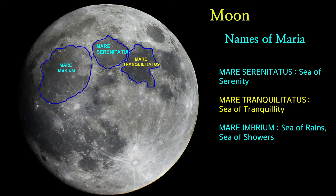Mare Tranquilitatis is a lunar mare that sits within the Tranquilitatis basin on the Moon. Mare Tranquilitatis means Sea of Tranquility. Mare Imbrium is a vast lava plain within the Imbrium basin on the Moon and is one of the larger craters in the solar system. Mare Imbrium means Sea of Rains, or Sea of Showers.